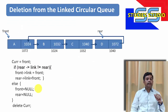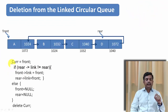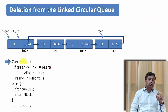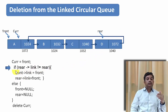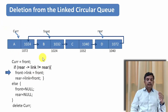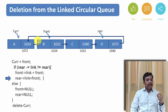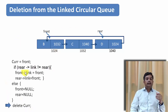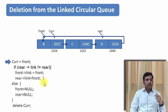Now let us see how to delete a node from a circular queue. Assume we have a circular queue and we take a pointer called current pointing to where front points — the node containing data A. If rear's link is not equal to front (condition true for more than one node), we set front's link equal to front (advancing front to node B), then set rear's link equal to front. Current is then deleted. Deleting another node: current points to node B, front advances to node C, rear's link is updated to point to C, and current (node B) is deleted.